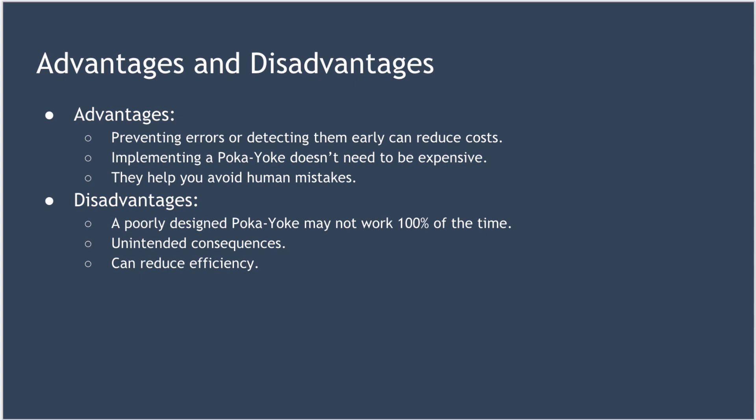Let's take a look at some advantages and disadvantages of Poka-Yoke. In terms of advantages: preventing errors or detecting them early can reduce costs, particularly if you're producing thousands or even millions of components per day. Implementing a Poka-Yoke doesn't need to be expensive, and they can help you avoid or minimize human mistakes. Some disadvantages include: a poorly designed Poka-Yoke mechanism may appear to show benefits but might not work 100% of the time. As humans, we like shortcuts, so sometimes a Poka-Yoke can result in unintended consequences — for example, a spelling and grammar checker removes the need for people to actively improve their communication skills, which could show up as a negative in other workplace situations.